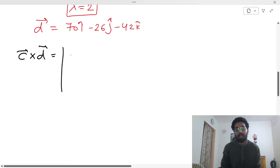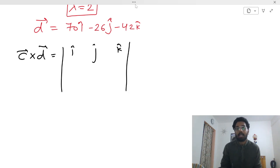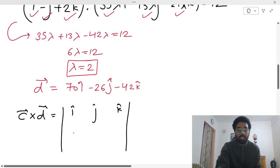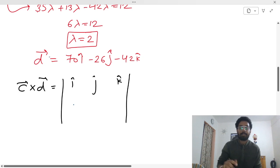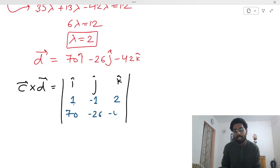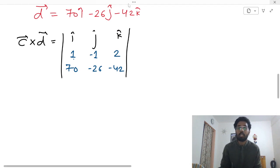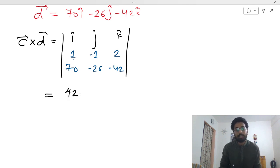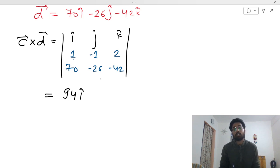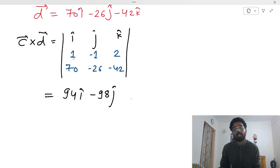Setting up the determinant for c × d with i, j, k: c vector is i − j + 2k and d vector is 70i − 26j − 42k. The i-cap component: (−1)(−42) − (2)(−26) = 42 + 52 = 94. For k-cap: (1)(−26) − (−1)(70) = −26 + 70 = 44k. For j-cap: let me recalculate — (1)(−42) − (2)(70) = −42 − 140 = −182, so j-cap gives +182j.